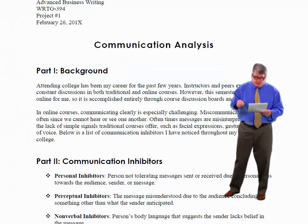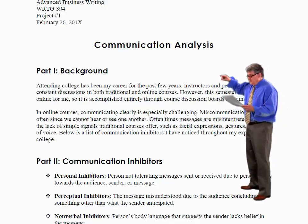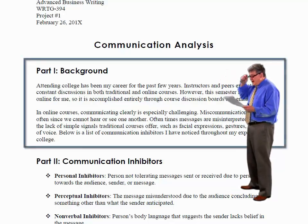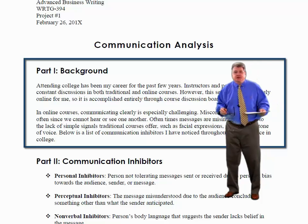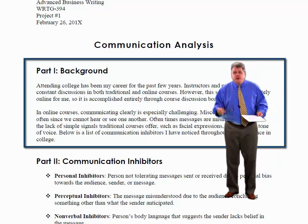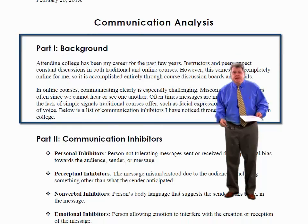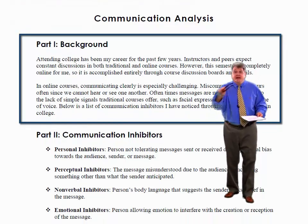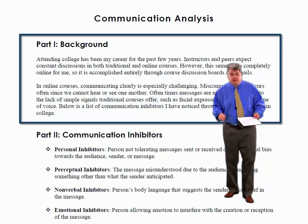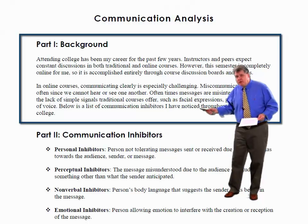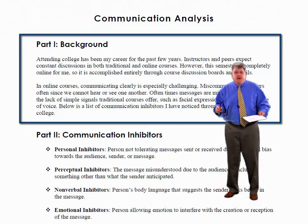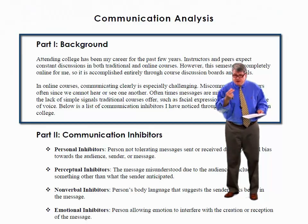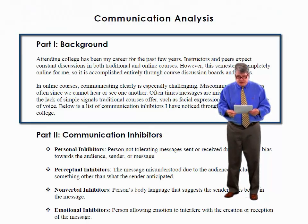So then we have the subtitle — part one: background. The purpose of this section is to inform the reader where you are, what you were doing, and what your routine communication tasks were as you were gathering these communication inhibitors. It sets the context for the table that is to follow. This is nothing more than one or two short paragraphs that sets the context for the communication inhibitors.